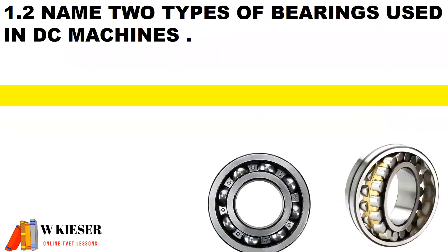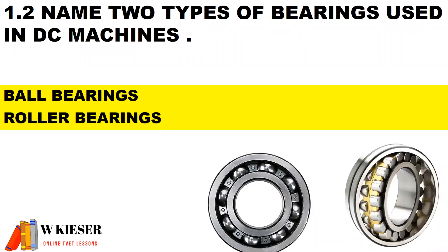Name two types of bearings used in DC machines. We get bore bearings and roller bearings.